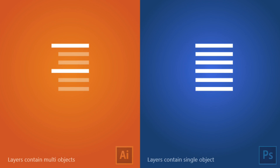Layers are a big difference between these two programs. In Adobe Illustrator, layers contain multiple objects — everything you do creates its own layer. Whereas in Photoshop, layers contain a single object, so you can stay in the same layer and still add a lot of content.